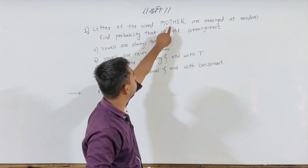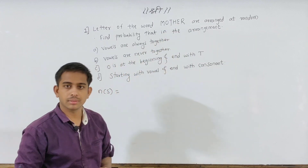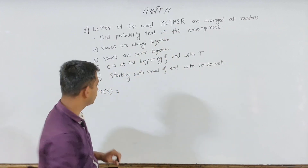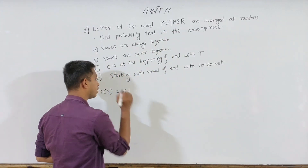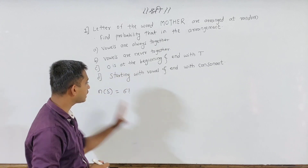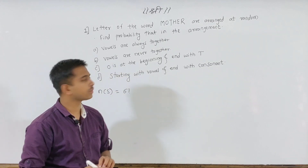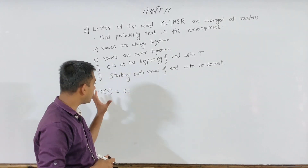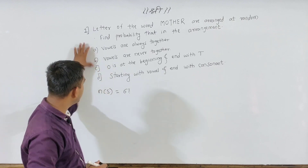We count: 1, 2, 3, 4, 5, 6 — there are 6 letters. This is the part of factorials. So we have to find n(S), and the number of possible arrangements is n(S) = 6 factorial.